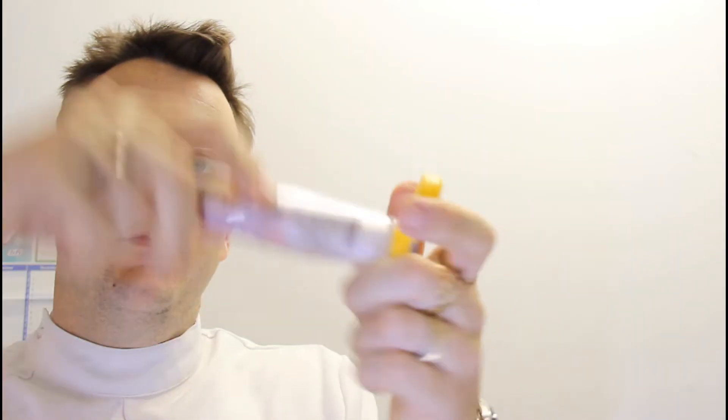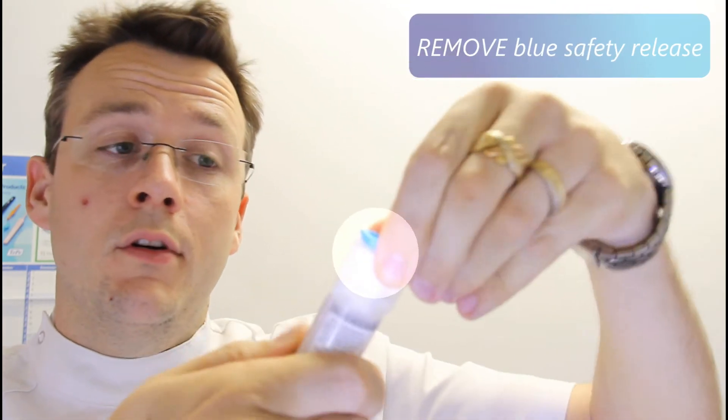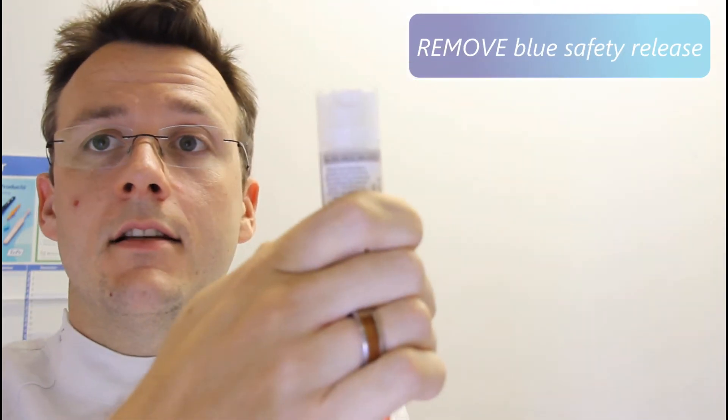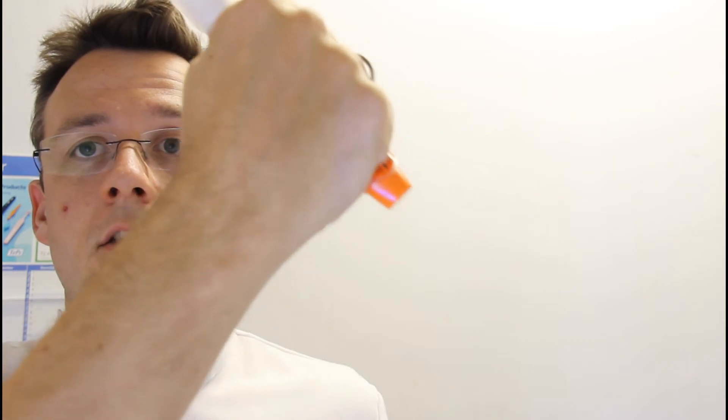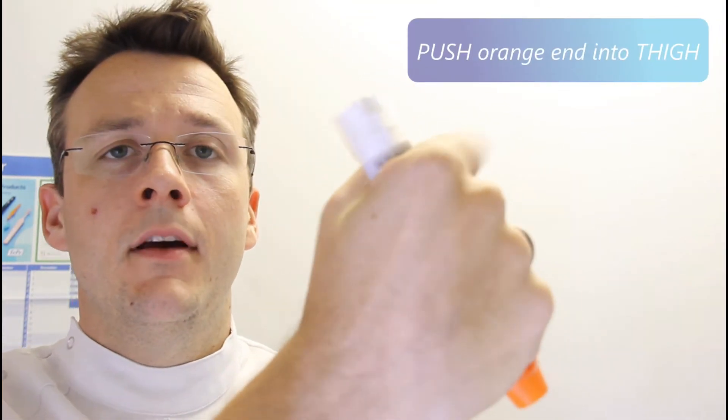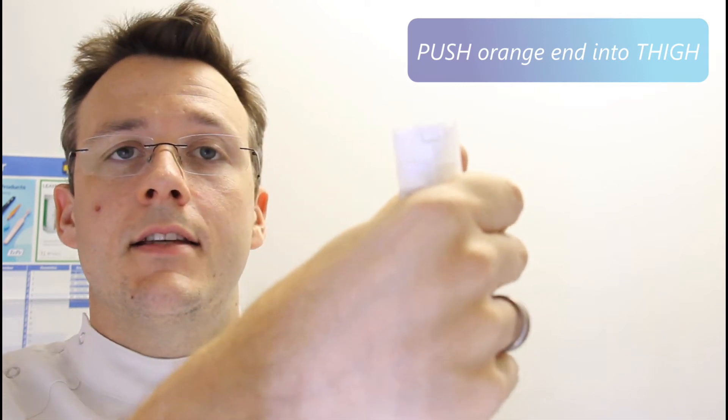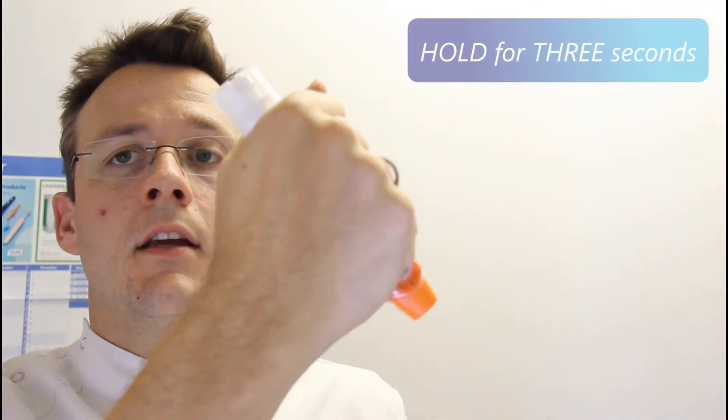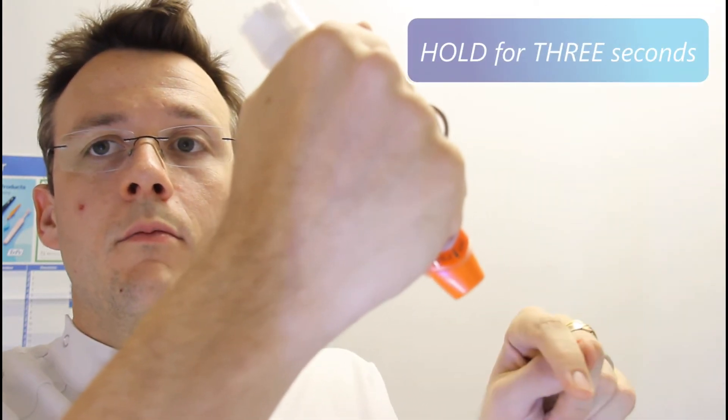So we all know to activate the EpiPen, you have to remove it from its protective case, take off the blue safety release, and now this is a live EpiPen. So to activate it, you push the orange end into the limb, preferably the thigh they say, and hold it for three seconds for the adrenaline to move into the body.